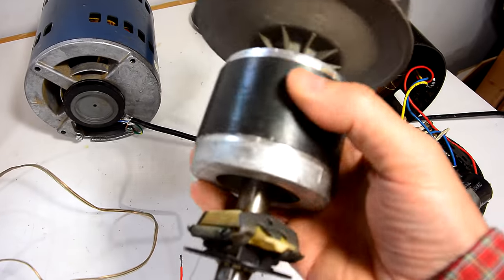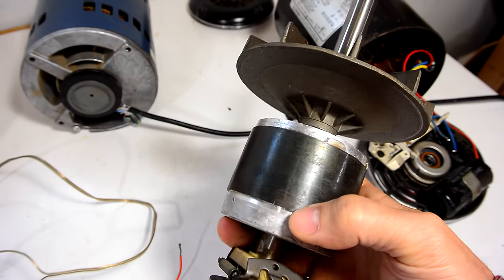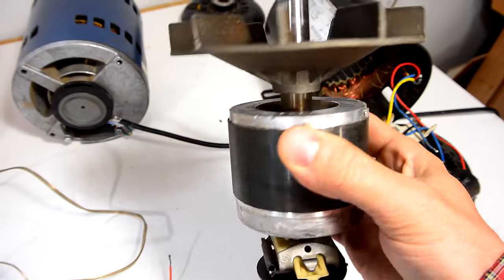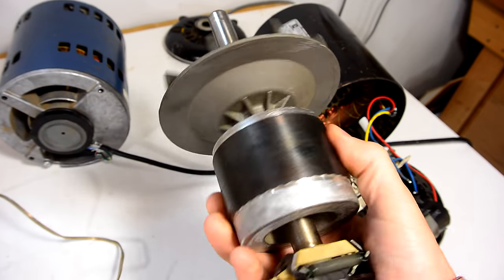The rotor of an induction motor is essentially a permeable iron core with a short circuit winding that's cast in place. And that causes it to resist changes in magnetic field, which causes it to follow any sort of spinning magnetic field.